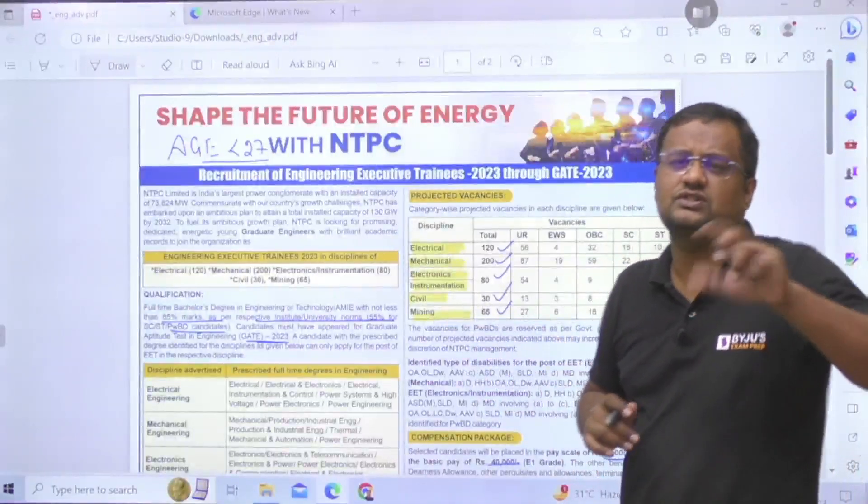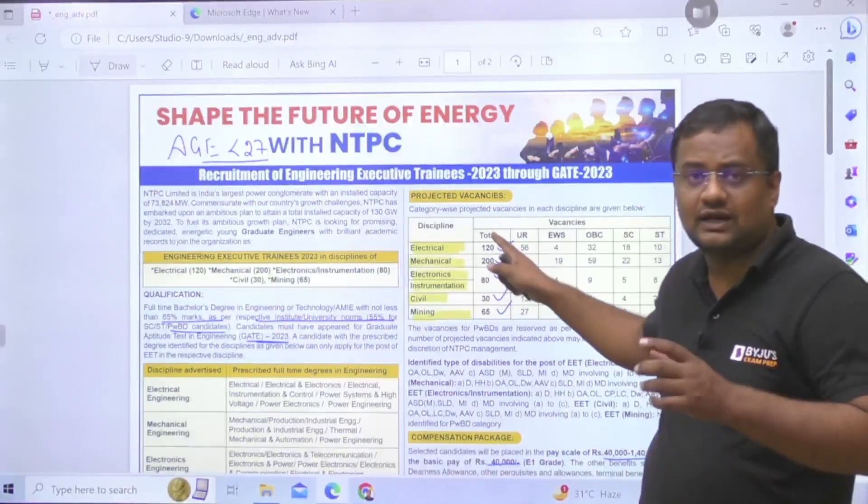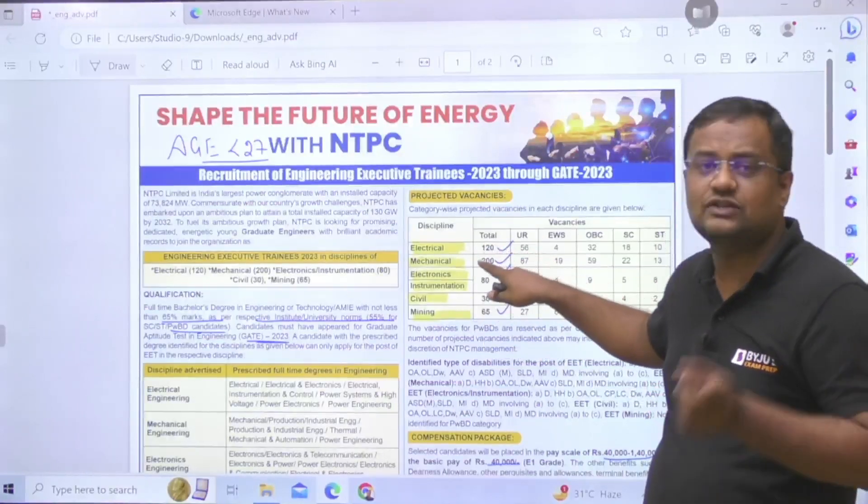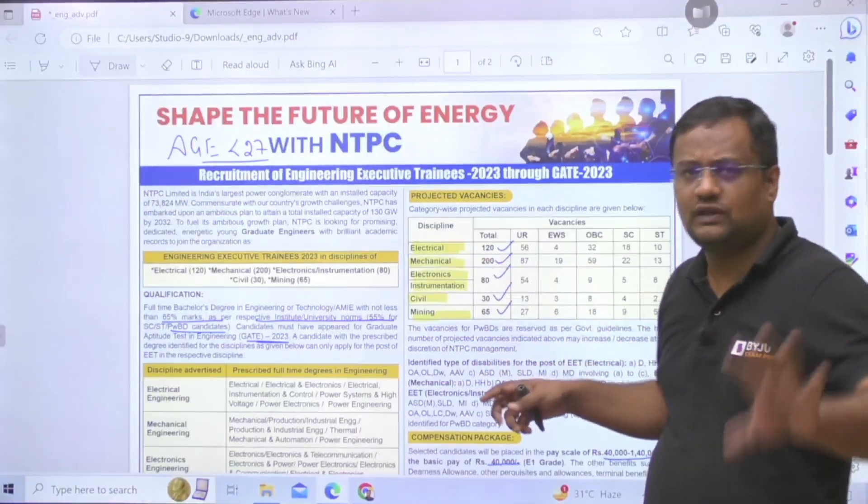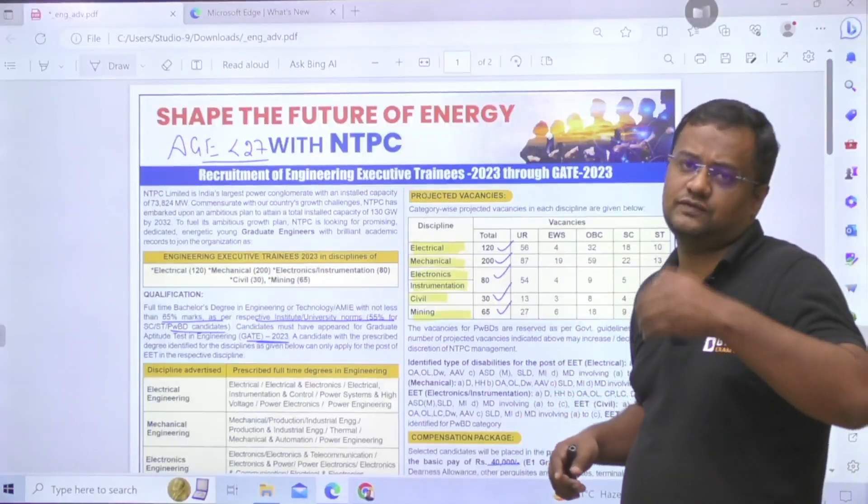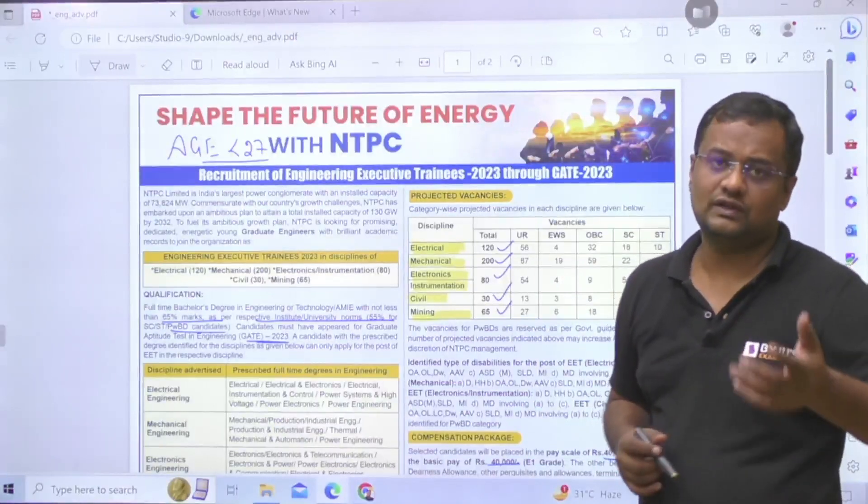Now of course, your rank, if it is in the range of, for unreserved category roughly I am saying in the range of 4x number of seats, then you should fill the form. Similarly for EWS and OBC it is 6x and 5x. You can fill this form and with the same ratio SC/ST can also fill the form.